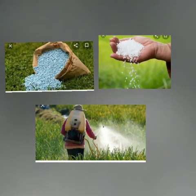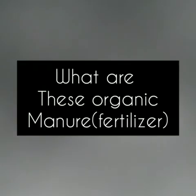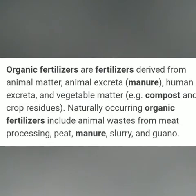So to overcome the drawbacks of pesticides, we can use natural fertilizers like organic manure. Organic manure is also called organic fertilizers. They are fertilizers derived from animal matter, animal excreta, human excreta, and vegetable matter. Naturally occurring organic fertilizers include animal waste from meat processing, manure, slurry, and guano.